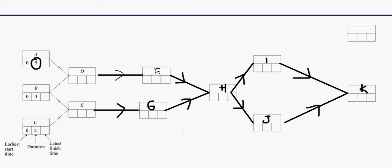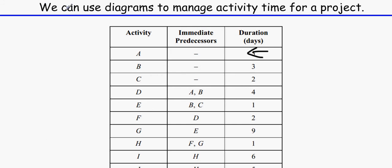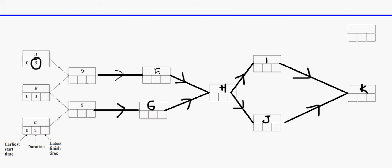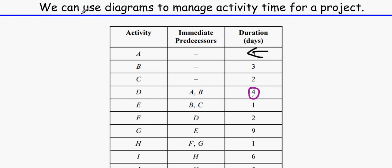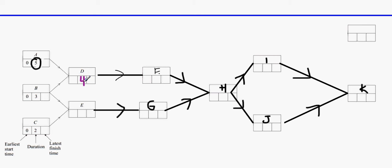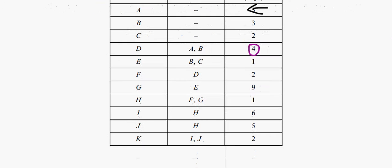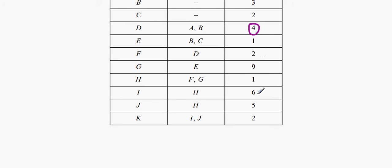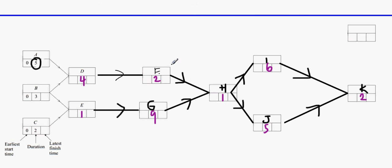Here we've got the structure drawn — J and K included. We can now fill in the durations from the precedence table. D takes four days, E takes one day, F takes two days, G takes nine days, H takes one day, I takes six days, J takes five days, and K takes two days. So the durations are: four, one, two, nine, one, six, five, two — these are how long each activity is going to take.